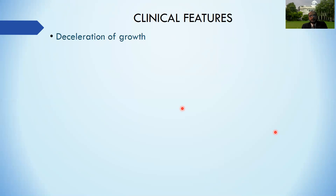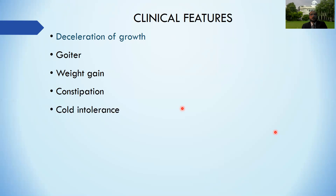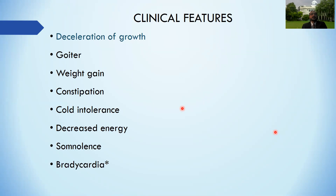Rarer central causes include problems with the hypothalamus or pituitary gland - tumors like craniopharyngiomas, neurosurgery, cranial irradiation, and head trauma can all lead to acquired hypothyroidism. Manifestations can be many, mostly subtle, but one important feature to remember is deceleration of growth - they tend to present with short stature and may present with goiter, weight gain, constipation, cold intolerance, lack of energy, apathy, increased tendency to sleep, and cardiac effects such as bradycardia and increased diastolic blood pressure.